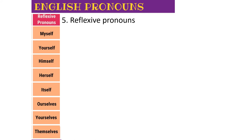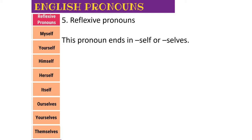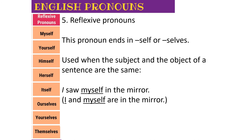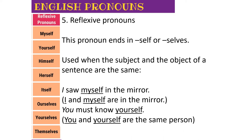Our last type is reflexive pronouns - this one's quite easy. If you read them, you'll see they always have 'self' or 'selves', and that's how you recognize them. They're very easy to recognize and use. A reflexive pronoun ends in 'self' or 'selves' and is used when the subject and object of a sentence are the same person. For example: 'I saw myself in the mirror' - 'I' is the same person as 'myself'. 'I' is the subject doing the seeing, and 'myself' is the object being seen. Another example: 'you must know yourself' - 'yourself' is a reflexive pronoun.